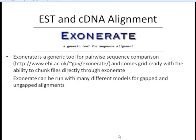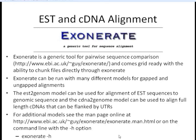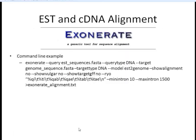Exonerate can be run in many different models for gapped and ungapped alignments. Today we'll talk about two specifically: EST to genome and cDNA to genome — though these are not all the modules available in Exonerate. If you'd like to see additional models, you can go to the man page at the URL shown, or from the command line use the -h option to see all possible models.